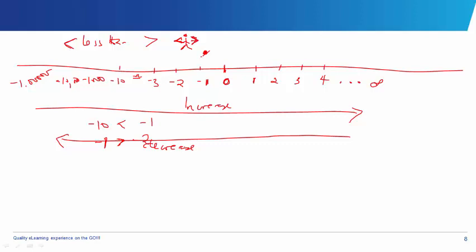With this number line and our directed numbers, we can do a lot of mathematics. Before now, when you were told to do 1 minus 3, the normal answer was it cannot go. But now we're going to teach you how. Let's use 1 minus 3 as our example. On the number line, 1 is here. Since 1 minus 3 means you are standing at 1 and you count 3 steps backwards — 1, 2, 3 — our answer becomes minus 2, which is where you landed.